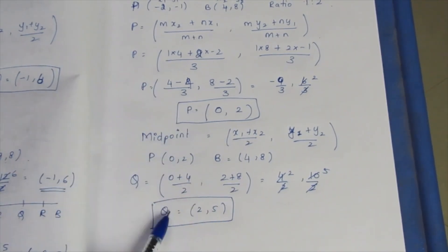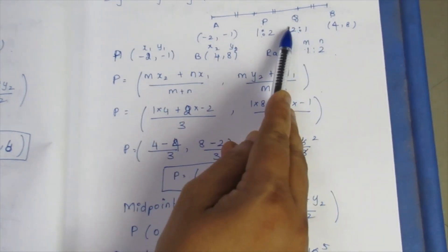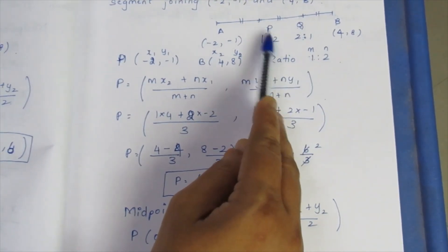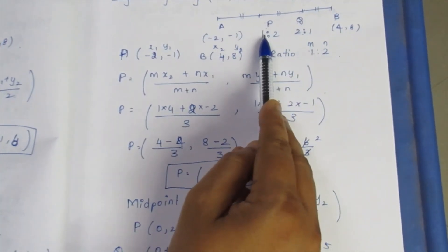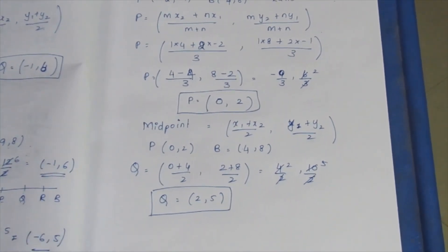If you add AB in ratio 2 to 1, you get the same result. Thank you.